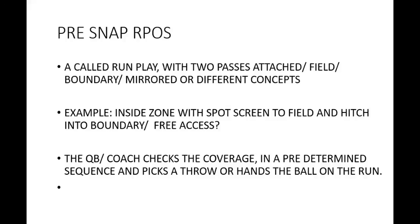For example: inside zone with a spot screen to the field and a hitch into the boundary. If you give me free access to the hitch into the boundary, I'm going to take it. We had one team where I ran it six times in a row and caught five hitches into the boundary off of run plays — all the way down the field. Eventually you have to tighten your corner or roll coverage, but if you give me my guy into the boundary, we'll take it. We probably throw between 80 and 100 hitches a day. I love the slant too, though we didn't throw a lot of slants last year — I had a sophomore quarterback, so you play to his strengths.